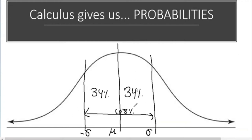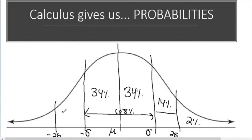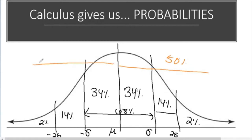Calculus majors went further: if you go out another standard deviation — two standard deviations from the mean — that region contains 14% of the distribution, and the outermost piece contains 2%. Because the distribution is symmetrical, the other side mirrors this: 14% and 2%. Notice that 34 + 14 + 2 = 50, meaning 50% goes from the middle all the way to one end. We can now talk about your likelihood of falling in these different areas.